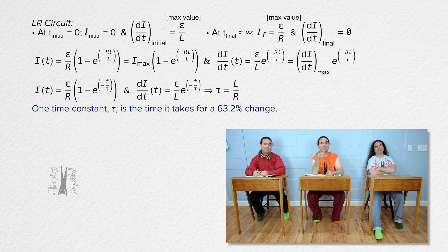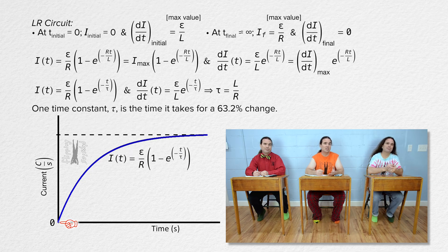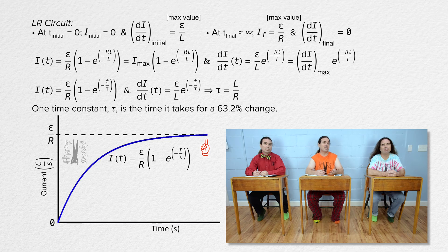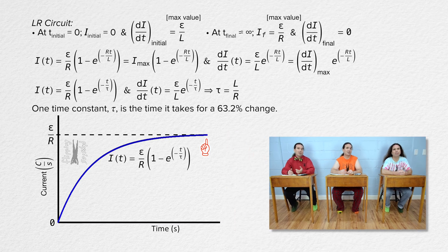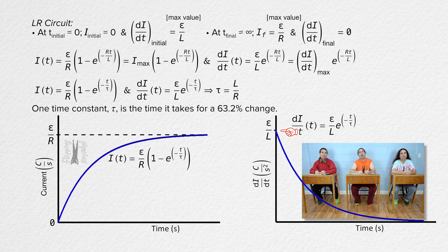If you look at the time constant in terms of graphs, for current as a function of time, the current starts out at zero, increases according to our equation, and asymptotes at a value of EMF over resistance — the value of the final steady-state current in this LR circuit. And the time rate of change of current starts out at a value of EMF divided by inductance, decreases according to our equation, and asymptotes at zero, the final value for the time rate of change of current in this LR circuit.